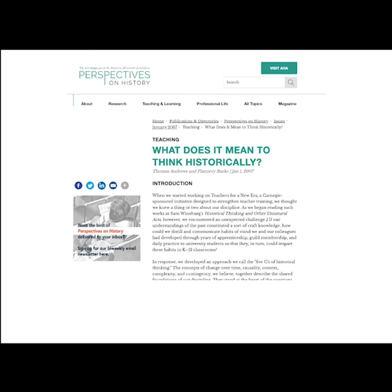I'm going to base this presentation on categories of critical analysis in the historical process identified by Thomas Andrew and Flannery Burke in their essay, What Does It Mean to Think Historically? published in January 2007 in the American Historical Association's magazine, Perspectives on History. It's available online, and you can click the link for more information if you'd like to read it for yourself.